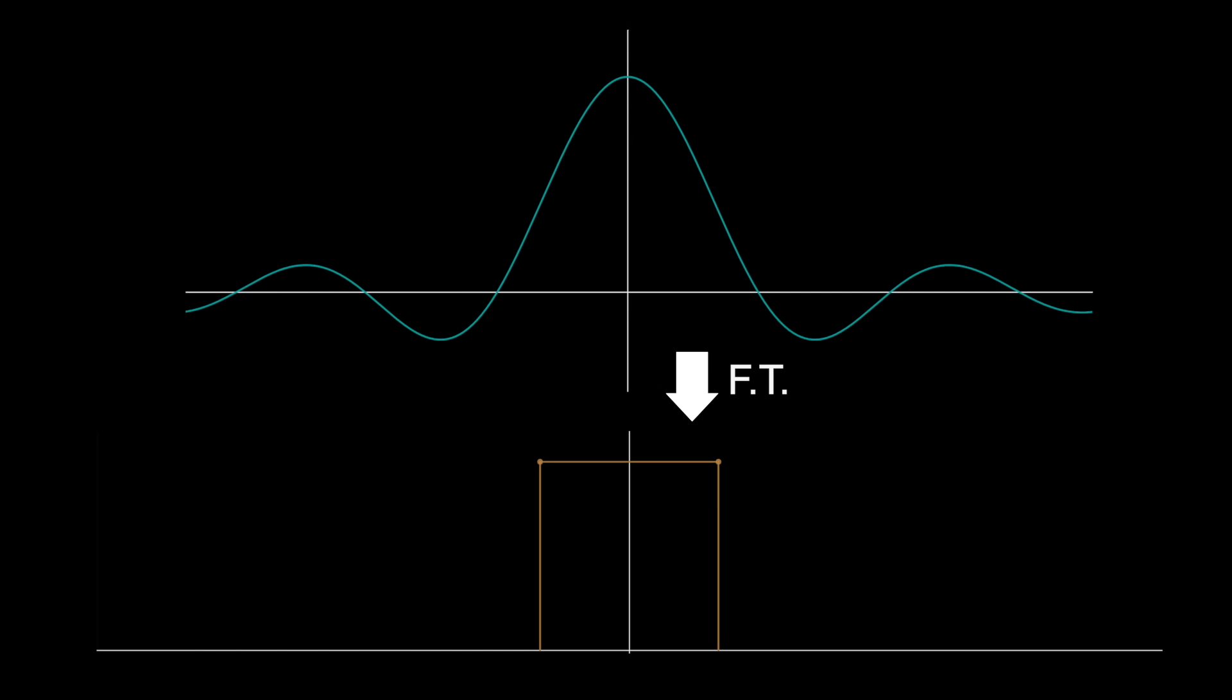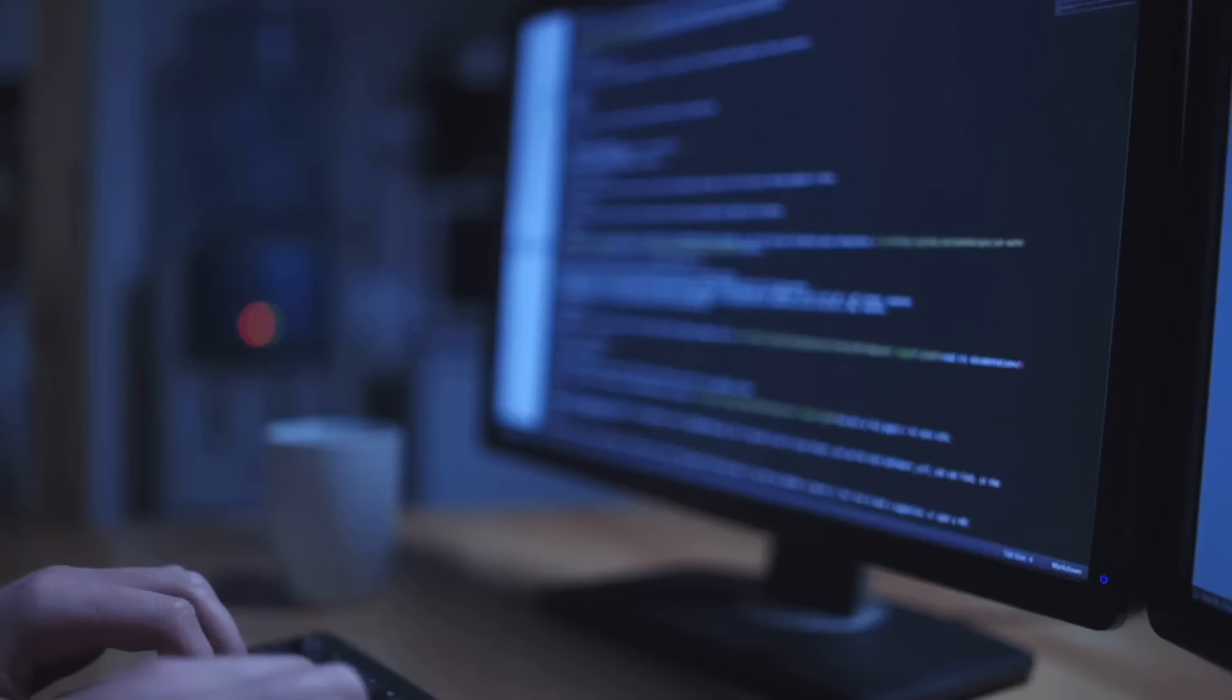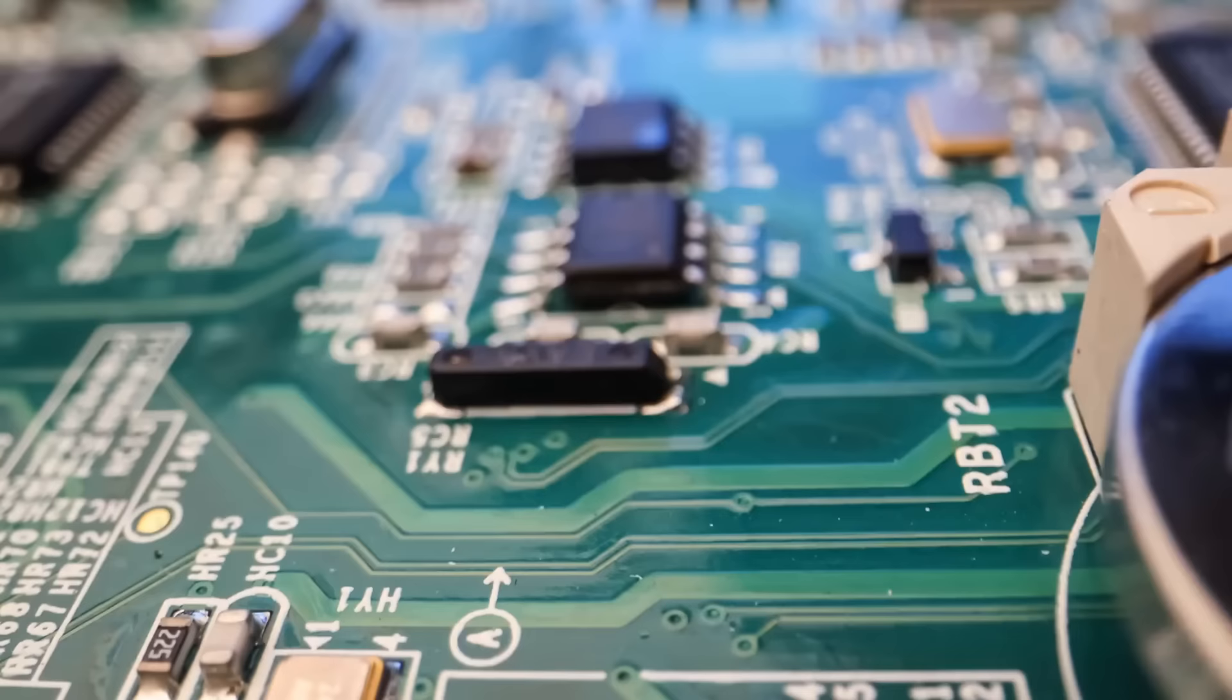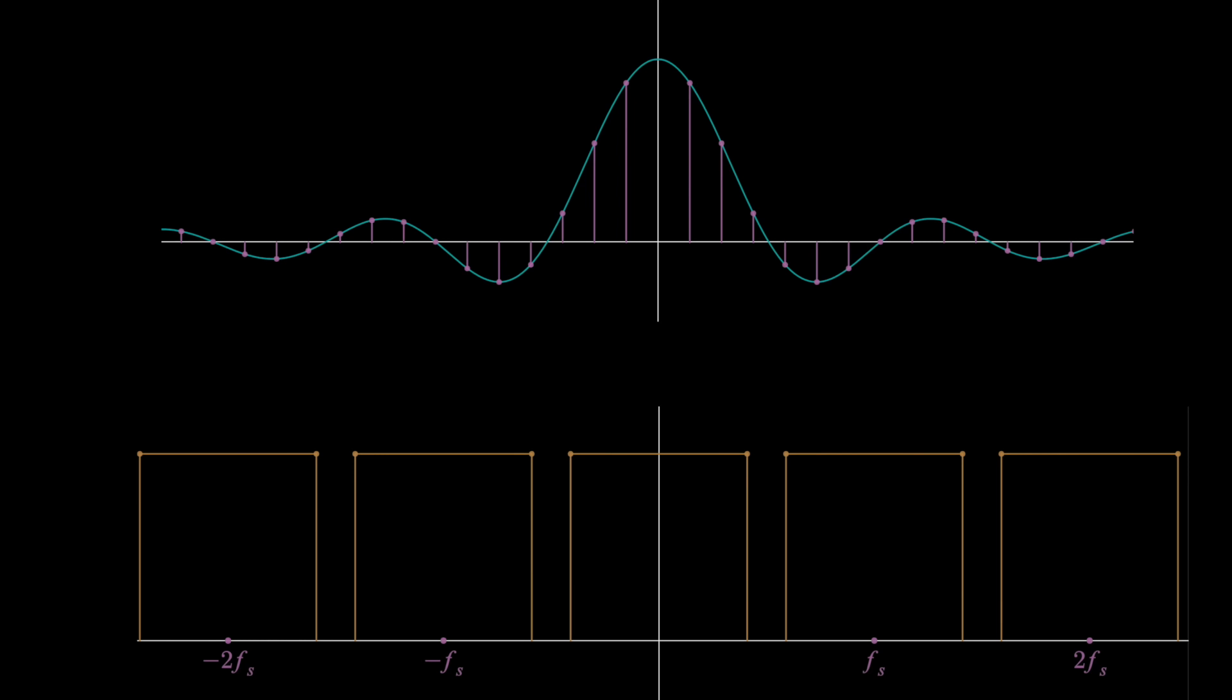And the reason for even doing this, like why sample at all, is because you can send those samples through a computer to do complicated stuff. If you just use the continuous signal of like someone's voice, if you want to do something to it, you need circuits, which take time to build and aren't so easy to change, whereas a computer program is very easy to change.